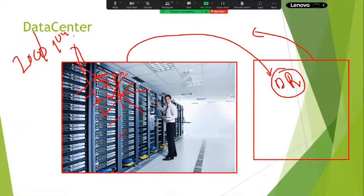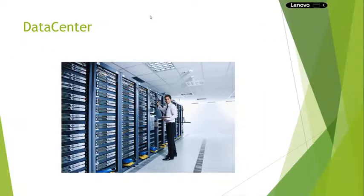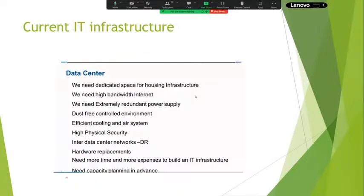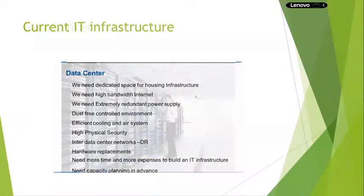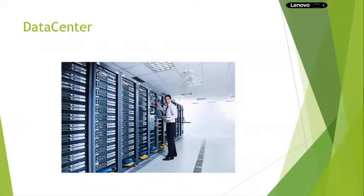Even though the World Trade Center was collapsed by terrorists, they hadn't lost any data — only physical damage of the building. Same way, to maintain our data safe and secure, we need to maintain disaster recovery. To build another same data center, again it is cost. Also, we need more time and more expense to build infrastructure. If you would like to build a few servers, it will take minimum seven to ten days, still in real time. Because of all these challenges, the entire IT industry is looking towards cloud.